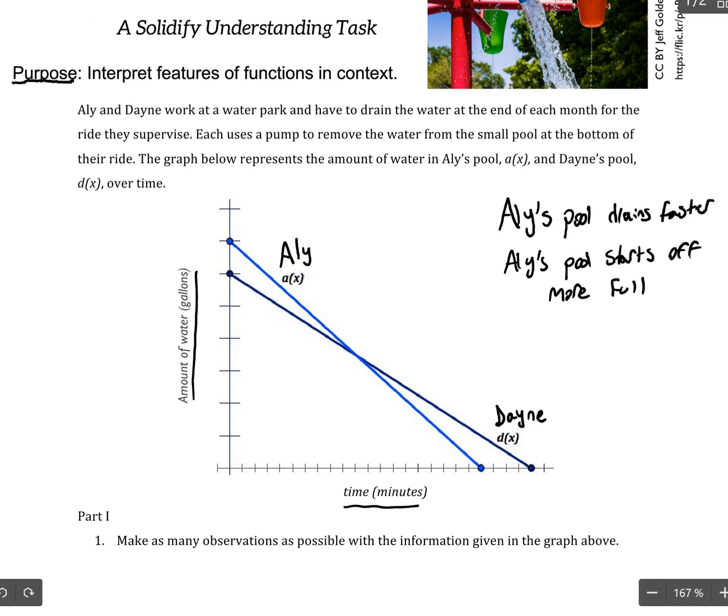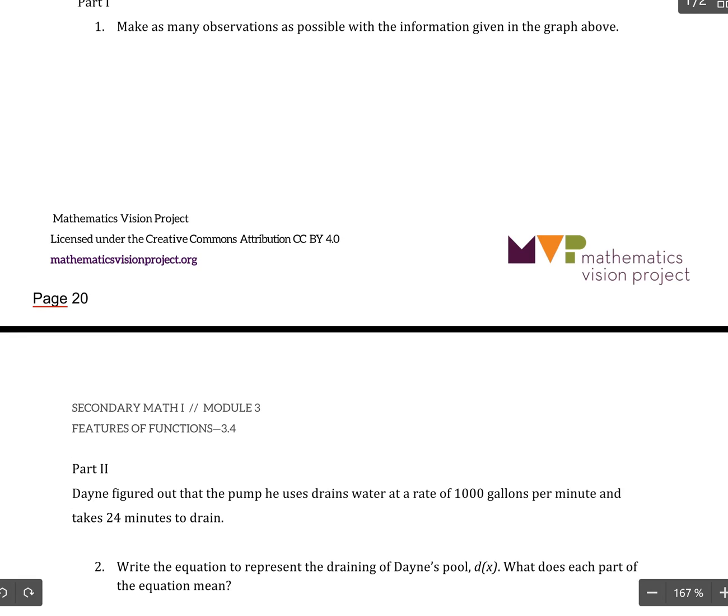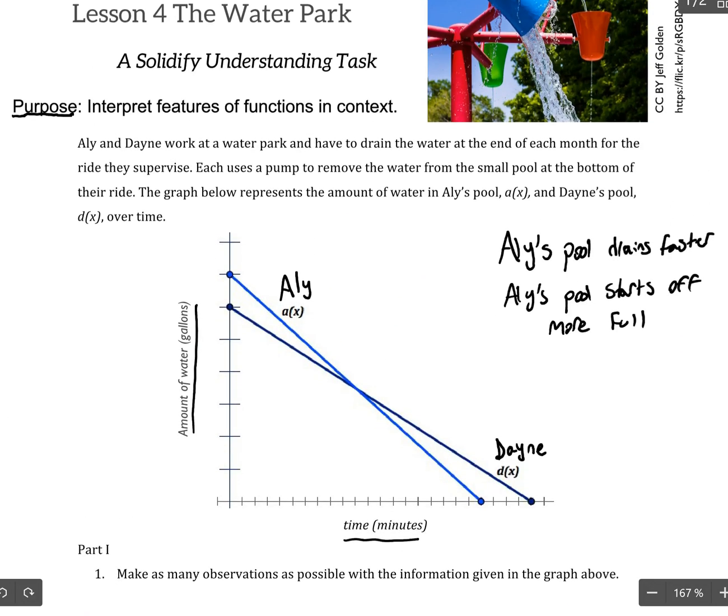So, we go on to part two, and it says, Dane figured out that the pump he uses drains water at a rate of 1,000 gallons per minute, and takes 24 minutes to drain. So, that's key information we can write up here. So, Dane's pool drains at 1,000 gallons per minute, and it takes 24 minutes to drain.